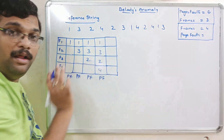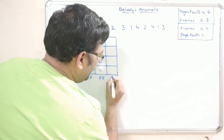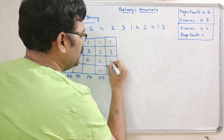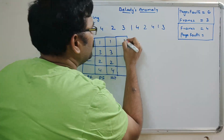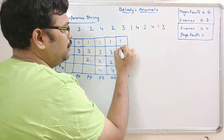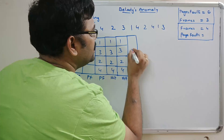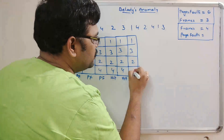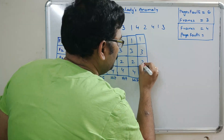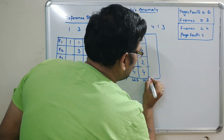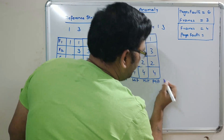The next reference is page 2, which is already available — a hit, so no page replacement is needed. Next is page 3, which is already available in main memory — again a hit, no page fault. Next is page 1, which is already available — hit, no page replacement. Next is page 4, which is also available — hit. Page 2 is available as well — hit, no page fault.